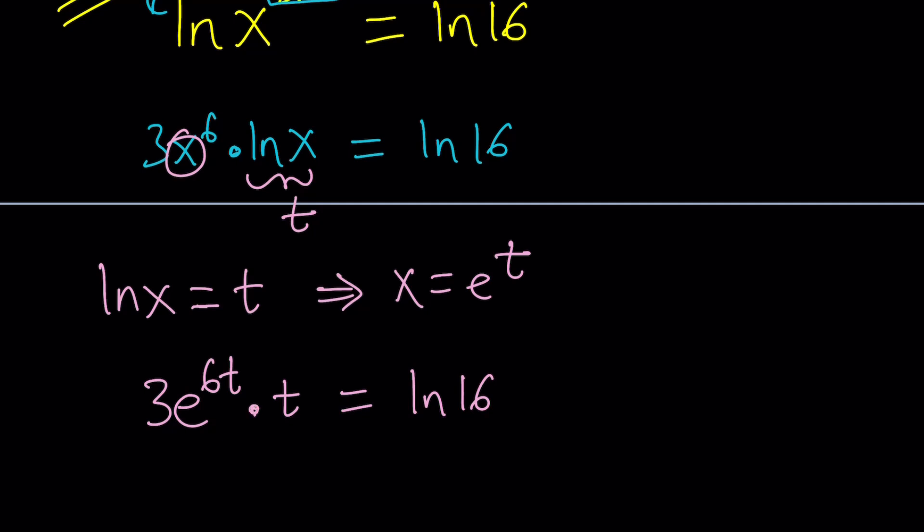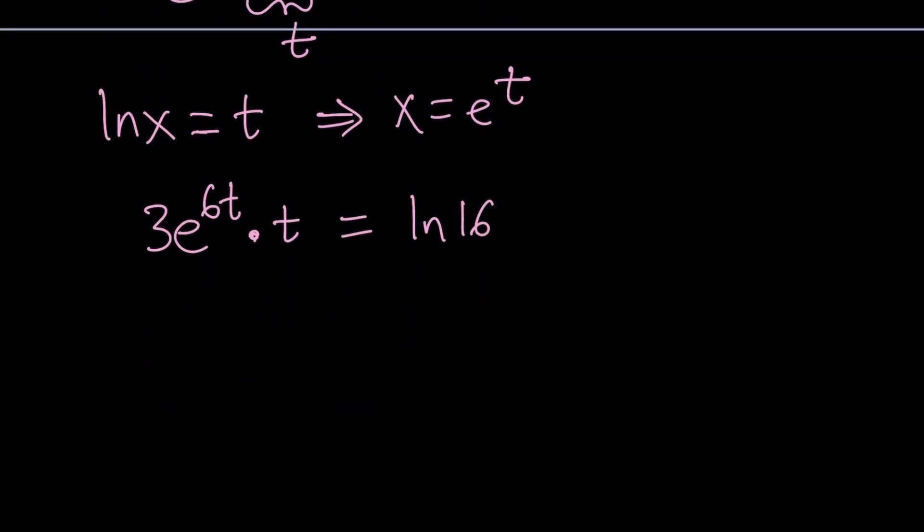Awesome. Now, we can go ahead and work this out a little bit more. Let's first divide both sides by three and switch these around. I'm going to put this in a certain form such that it's going to look like t times e to the t or something times e to the power something. Make sense? We're going to use a very special function for that, which is called Lambert's w function.